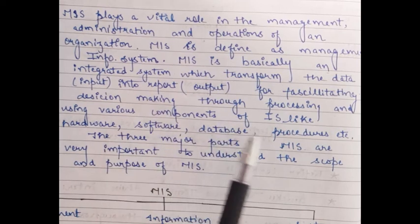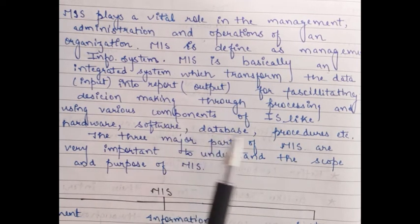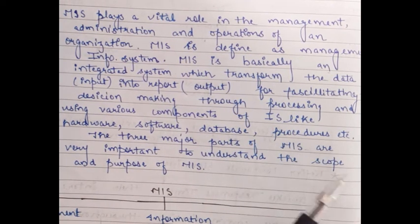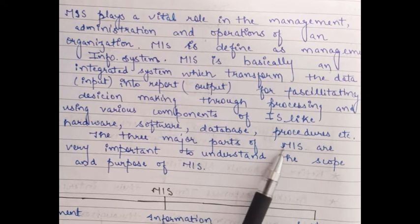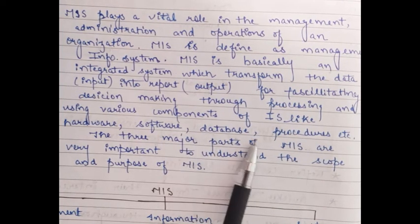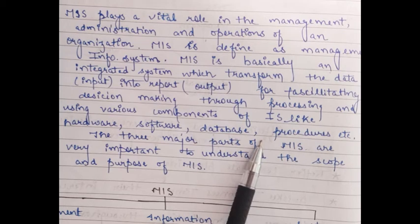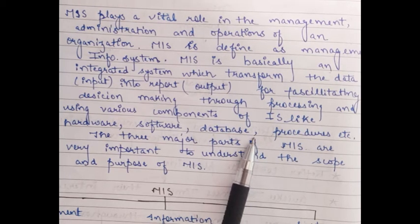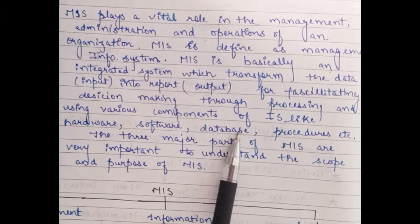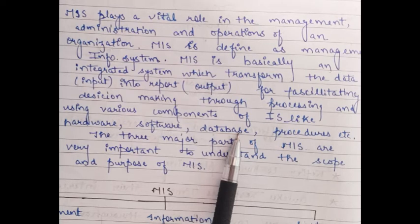MIS plays a vital role in the management, administration, and operation of the organization. MIS is used at the middle level of management. MIS is designed by combining TPS data and DSS data using MIS software. TPS is basically your transaction processing system, which works at the lower level. DSS is basically the decision support system, which is used in top level management.